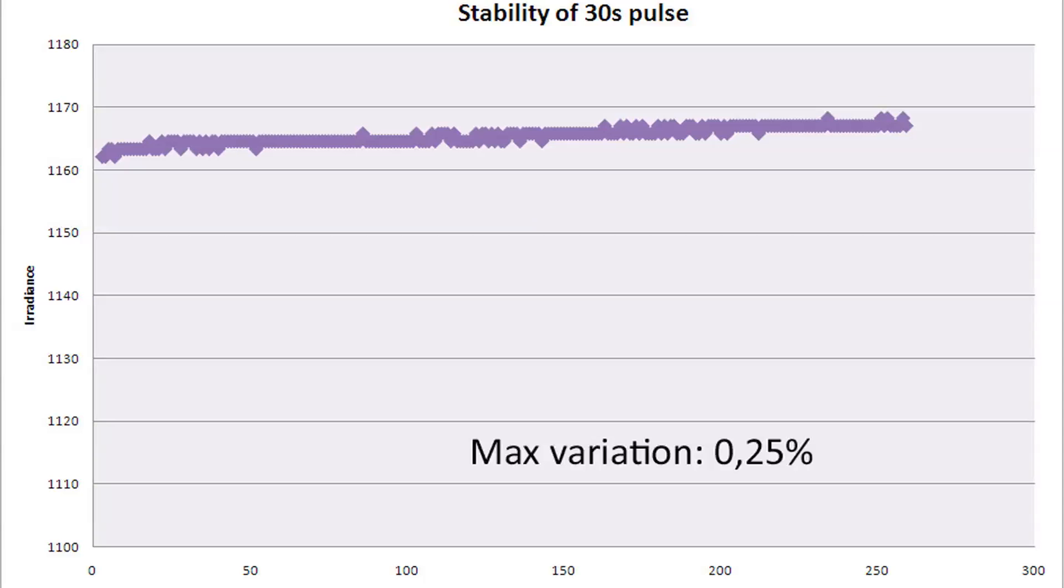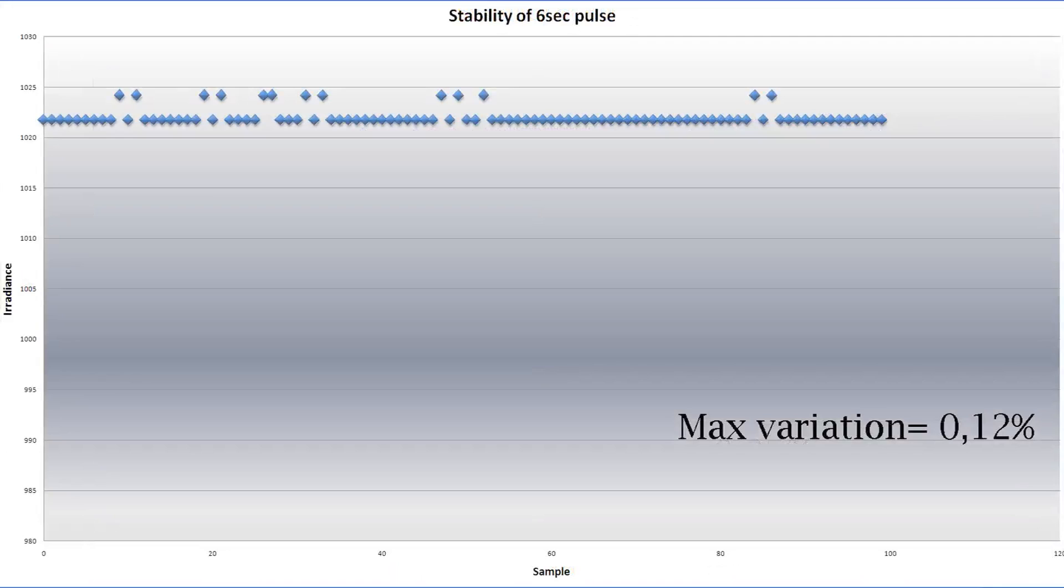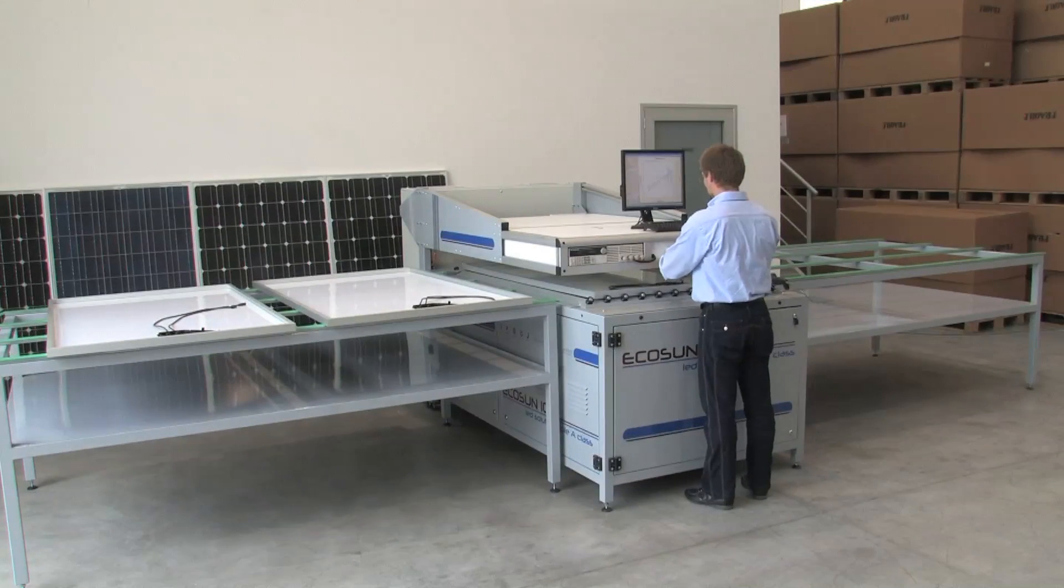Radiation stability. The sun simulator Echosun 10L has a very high temporal stability, also with very long pulse. For a pulse of 30 seconds, the maximum variation is 0.25%, while with a pulse of 10 seconds, the variation reaches an even lower value of 0.18%.